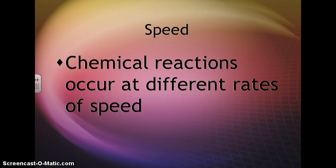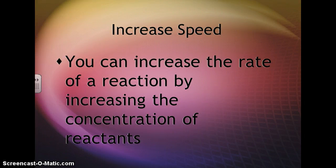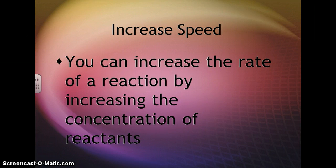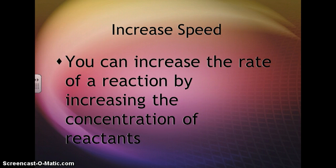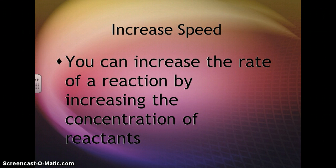Chemical reactions occur at different rates of speed, and there are lots of different things that can affect that speed. You can increase the rate of a chemical reaction by increasing the concentration of reactants. For instance, thinking back to the physical and chemical changes lab where we used hydrochloric acid to dissolve the magnesium ribbon — if we had used a higher concentration of hydrochloric acid, the magnesium ribbon would have dissolved much more quickly. That's an example of increasing the concentration: putting more of the reactant in one place.